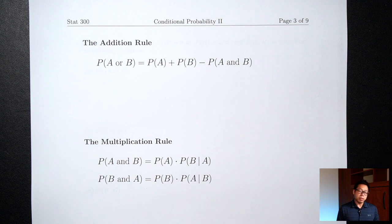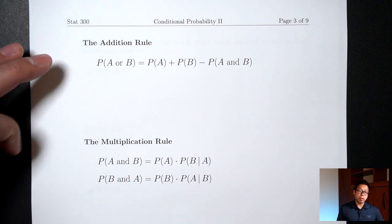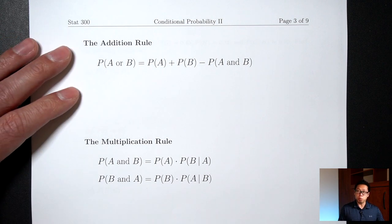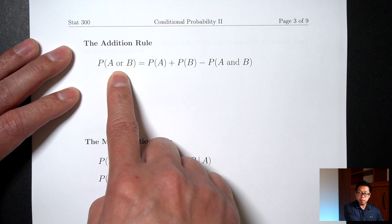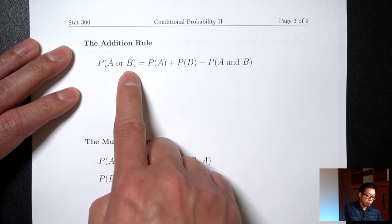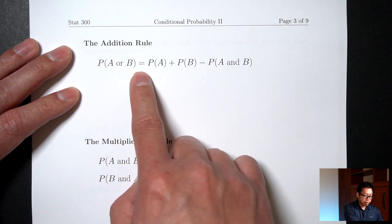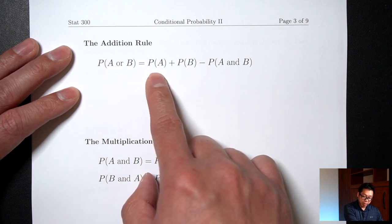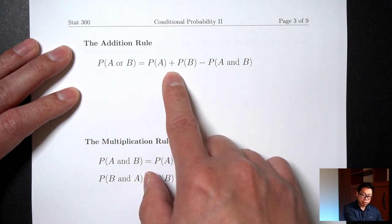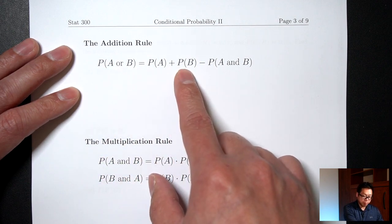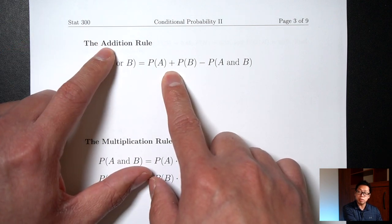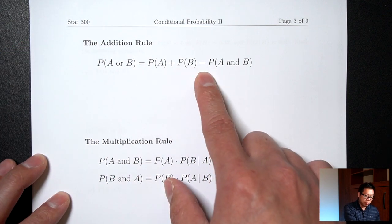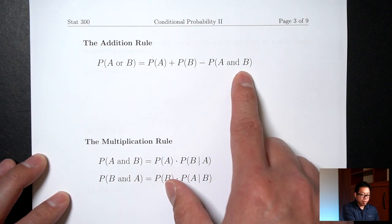Let's now talk about some formulas. The first formula is called the addition rule, and it's a formula for finding OR probabilities. Probability of A or B is equal to probability of A plus probability of B — that's where the name addition comes from — minus the probability of A and B.